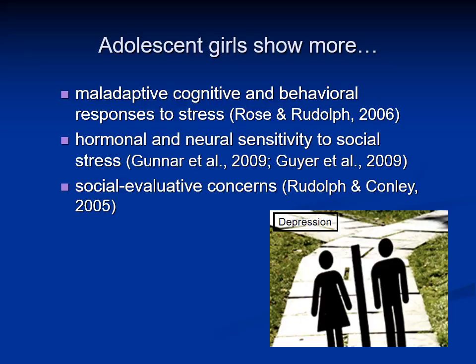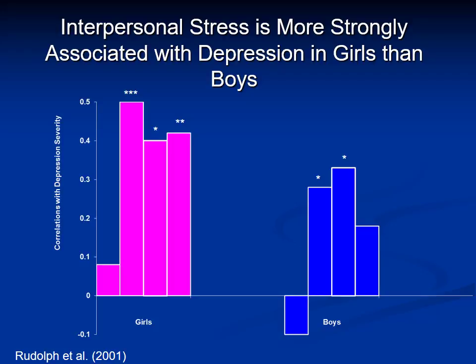We then examined the hypothesis that girls would show higher levels of depression in the context of interpersonal stress than boys — in other words, that girls would be more reactive to interpersonal stress. These results are from the sample of 8- to 18-year-olds, examining several stress indexes including measures of interpersonal stressful life events (both independent and dependent), chronic strain, and conflict in relationships. The correlation coefficients are shown for girls in pink and boys in blue. Higher levels of relationship stress, particularly dependent interpersonal stress, were strongly associated with depression in girls. A couple of stress indexes were associated with depression in boys, but the associations were weaker and less consistent, and significantly stronger in girls. When we looked at non-interpersonal stress, there were actually no significant associations between stress and depression severity in either girls or boys.